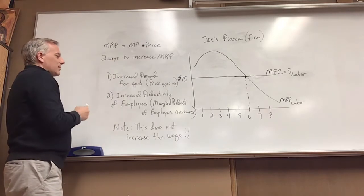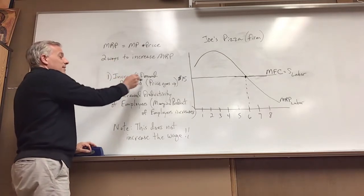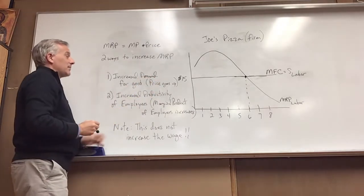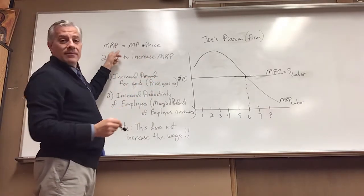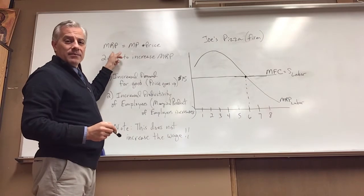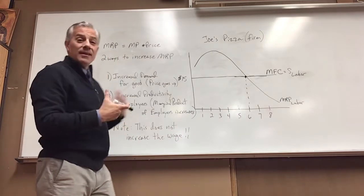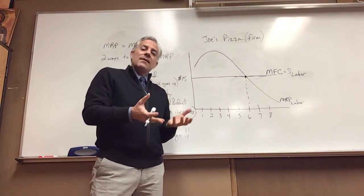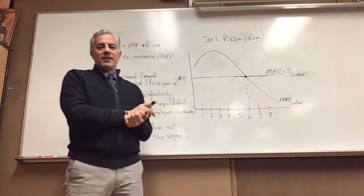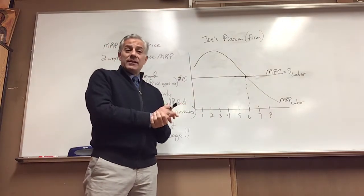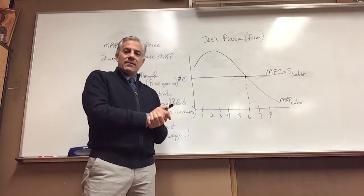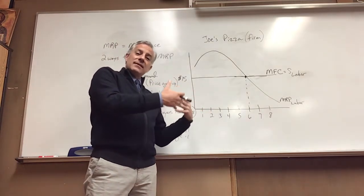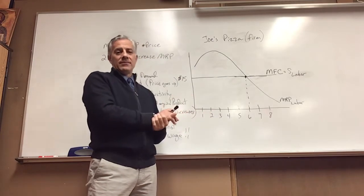So there's two ways to increase marginal revenue product. Increase demand for the good that we're making. That's going to cause the price to go up. If the price goes up, marginal revenue product goes up. Very simple. That's why companies advertise, right? If they advertise, there's more demand for their product, pushes up the value of the price, makes employees more valuable. If Nike shoes are more expensive, plain and simple Nike employees become more valuable.